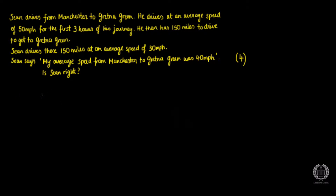So the question is: Sean drives from Manchester to Gretna Green. He drives at an average speed of 50 miles per hour for the first three hours of his journey. He then has 150 miles to drive to get to Gretna Green. Sean drives these 150 miles at an average speed of 30 miles per hour. Sean says his average speed from Manchester to Gretna Green was 40 miles per hour. Is Sean right?